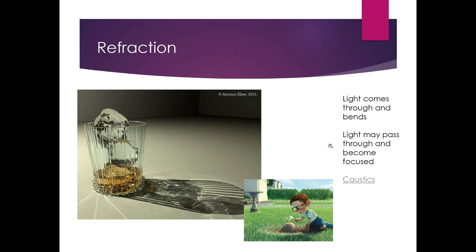You also have something called caustics. Caustics describe these focused light rays that happen from the bending of light through refraction. A kid burning an ant with a magnifying glass is an example of a caustic ray — and it can actually be dangerous and start a house fire if you're not careful.